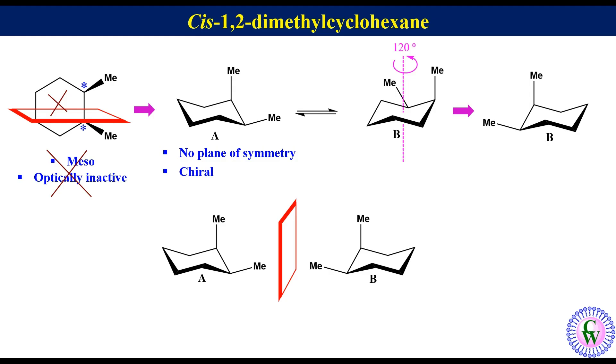Since two enantiomers have the same energy and they are interconvertible by just ring flipping, cis-1,2-dimethylcyclohexane always exists as a one-to-one mixture of two enantiomers and therefore it is optically inactive.